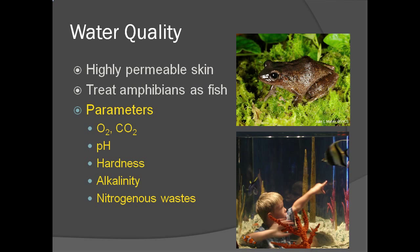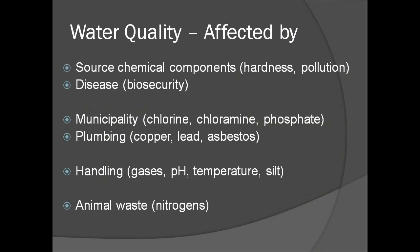Solutes and other water quality parameters that are important to measure and control include oxygen, carbon dioxide, pH, hardness, alkalinity, and nitrogen in its various forms. These parameters can change depending on the underlying properties of the water and are affected by a number of variables, including the original source of the water, which may affect basic chemical components or contain infectious diseases such as chytrid fungus, the delivery of the water as some municipalities add additives or toxins may leach from the piping, the handling of the water can change gas concentration, pH, and temperature, and the animals themselves can change the composition of the water.